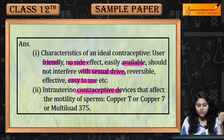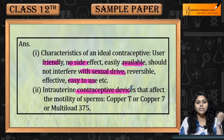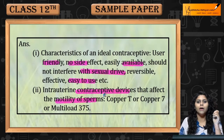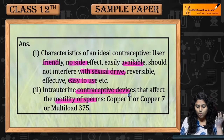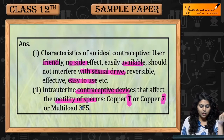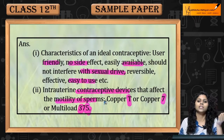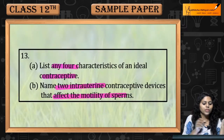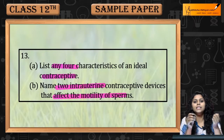Name two intrauterine contraceptive devices that affect the motility of sperm. The intrauterine contraceptive devices that affect sperm motility are Copper T, Copper 7, and Multiload 375. This was question number 13.